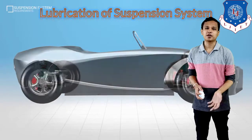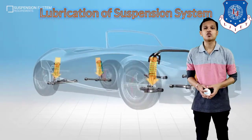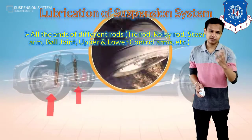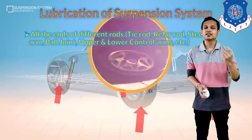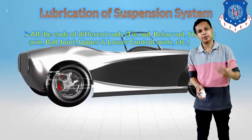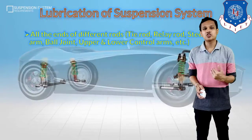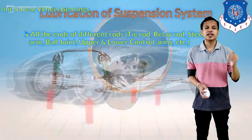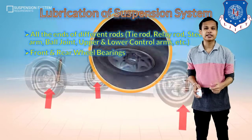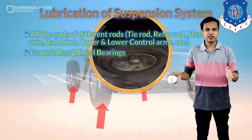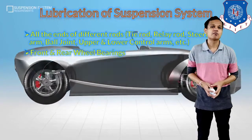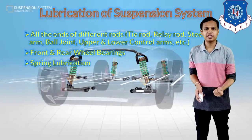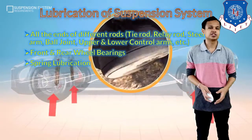The next thing involved in suspension maintenance is lubricating the suspension system components. All the ends of the different rods — which are components of the suspension as well as the steering system such as tie rods, relay rods, steering arms, ball joints, upper and lower control arms — will be lubricated whenever required. Front end and rear wheel bearings will also be lubricated. The last thing is spring lubrication, which is generally required in case of coil springs or any independent suspension system.